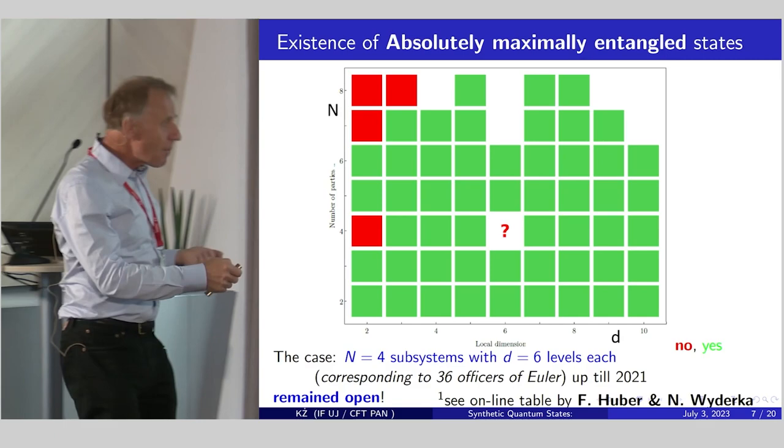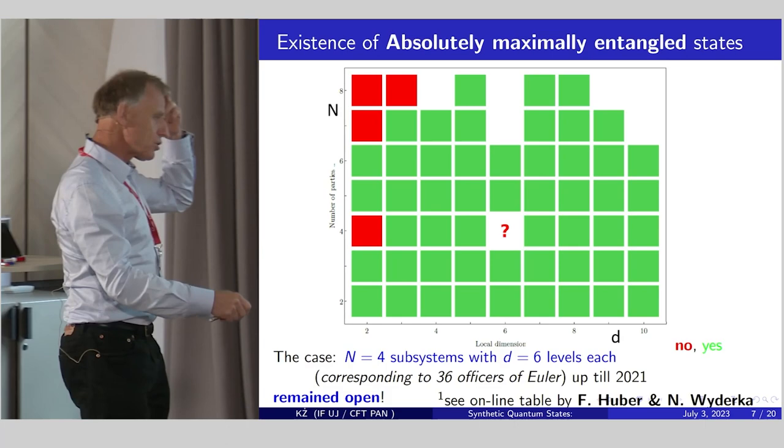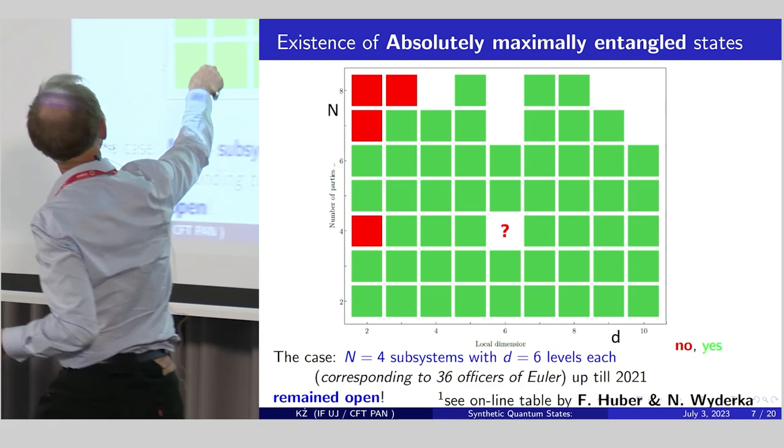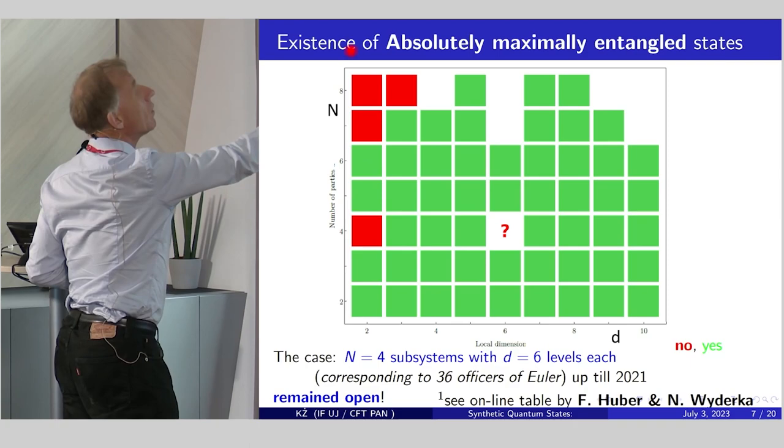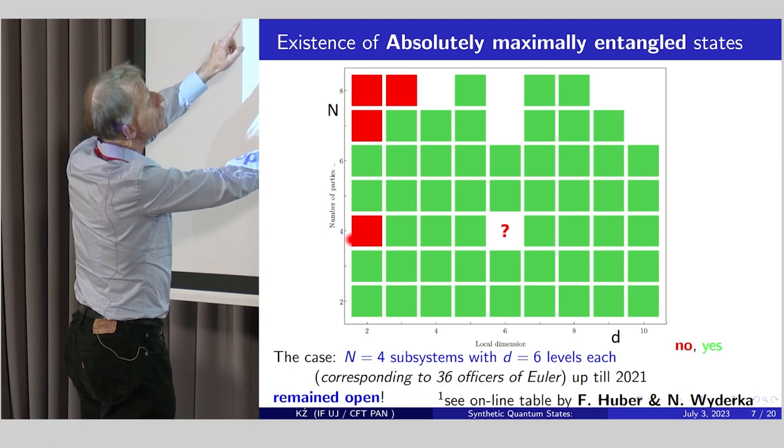You can ask a simple question. For what number of subsystems n and the local dimension d such states do exist? This is a table, a nice table produced by Felix Huber and Nikolai Widerka. In principle, here is local dimension d. It goes from 2 in principle to infinity here. And here is the number of parties from 2 to 4, and so on, in principle to infinity. And as you can guess, green means they exist, red do not exist. Here, I will emphasize, there are no such states for four qubits.